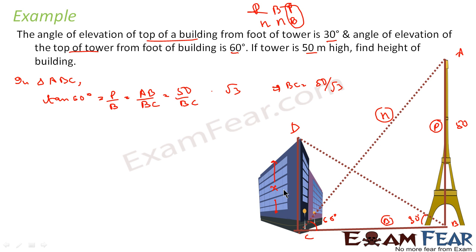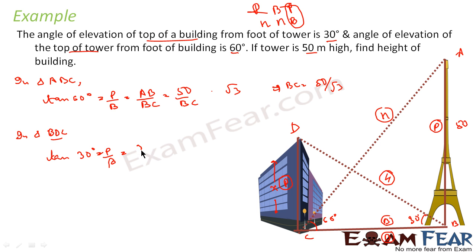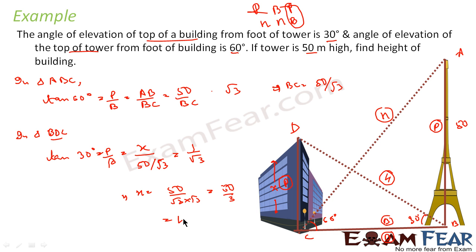Now that we have BC = 50/√3, we take triangle BDC. Since B is the frame of reference, the perpendicular is CD (height of building, X) and the base is BC. Using tan 30° = X / (50/√3), and tan 30° = 1/√3, we solve: X = (50/√3) × (1/√3) = 50/3 meters. So the height of the building is 50/3 meters.